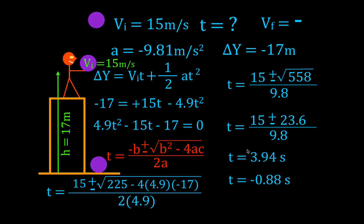We are looking for the time, so we use the positive value. The negative value would apply if we were launching the ball from the ground surface — but we are launching from a height of 17 meters, so we use the positive answer. The total time the object is in the air is 3.94 seconds. That is our final answer.